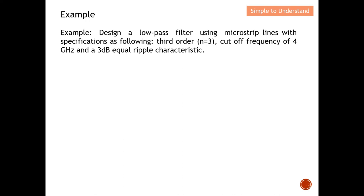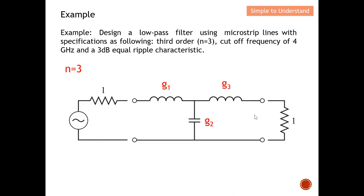Since the filter order is three, I can draw the lumped element circuit with three elements — Element 1, Element 2, and Element 3. Inductors are in series while capacitors are shunt, because this is a low-pass filter. These three elements are denoted g1, g2, and g3.